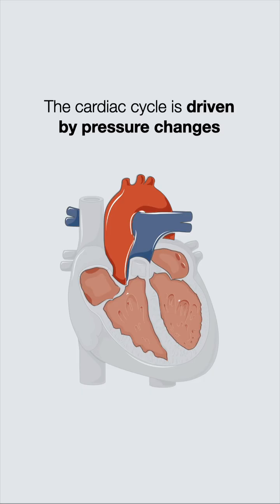The cardiac cycle is driven by pressure changes within the heart chambers and great vessels. Systolic and diastolic pressures create pressure gradients, causing blood to flow through the heart and major vessels along the path of least resistance.